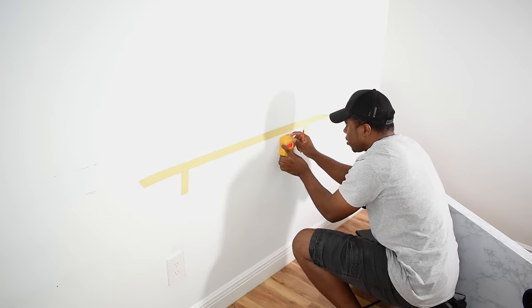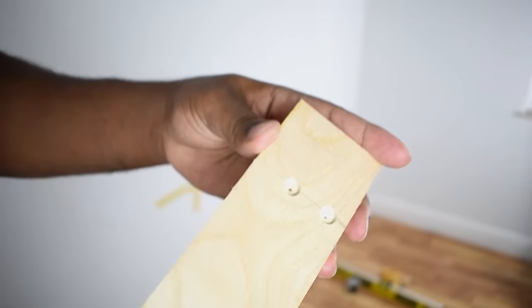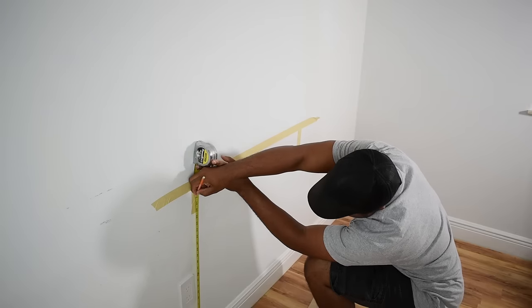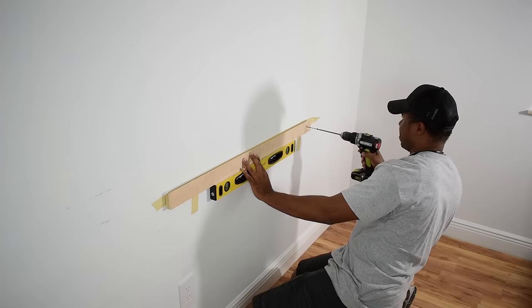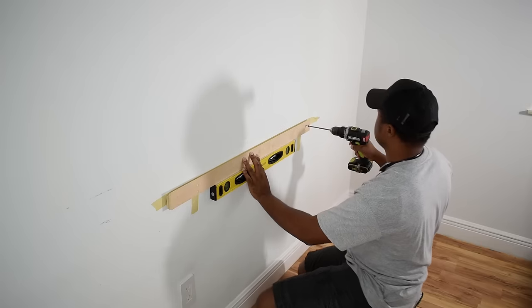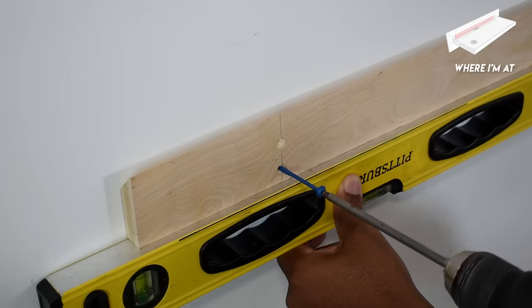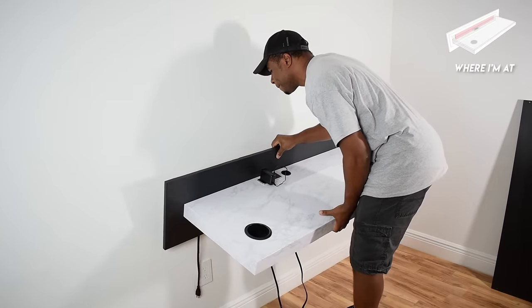After finding the studs in the wall, I can then transfer those marks over to the French cleat. I then made a mark 28 inches from the floor, which marks the bottom of the French cleat. I did get lucky. I was able to line up the French cleat system to three studs in the wall. As you can see, I drove two screws into each stud. All there's left to do is to set the desk on the French cleat.